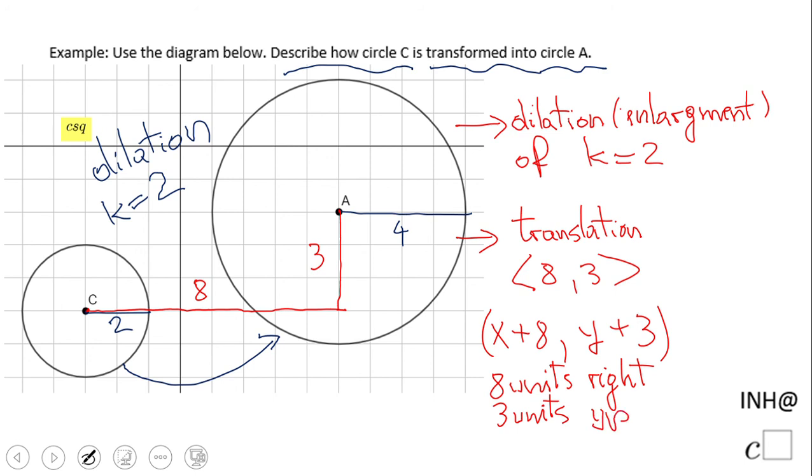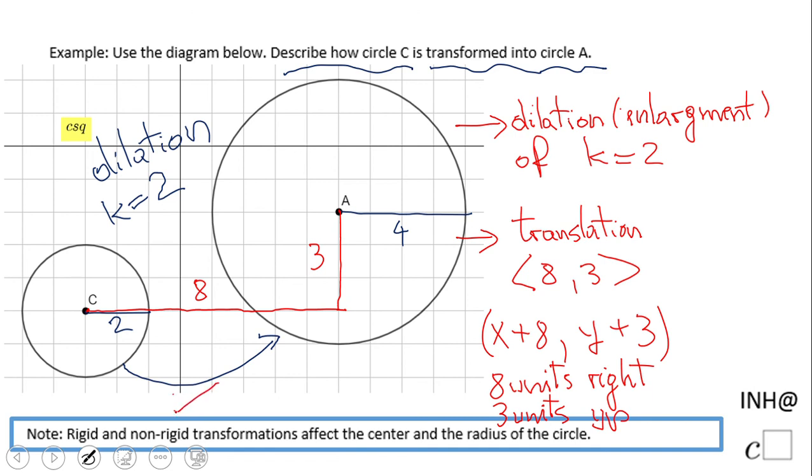Of course you can write an equation if that is needed, but we do not need it in this example. That's it. Very important, remember: rigid and non-rigid transformations affect the center and the radius of the circle.